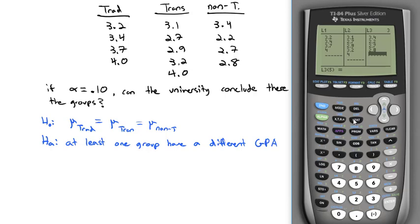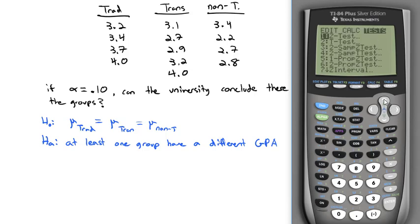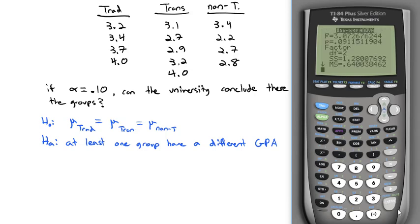Now let's go ahead and run the ANOVA. We'll hit stat, and this time going over to test, and all the way down to the bottom. You'll see ANOVA. For the ANOVA, we enter in our list. We have the three lists. So second one for the first list, comma, second two for the second list, comma, second three. And we keep going based on how many lists we have. We only had three lists. And when we hit enter, we get all sorts of information.